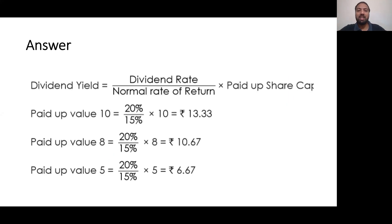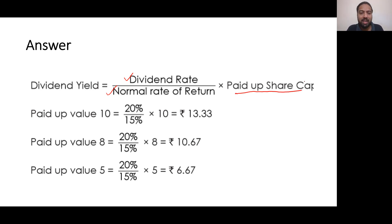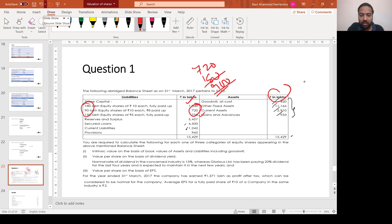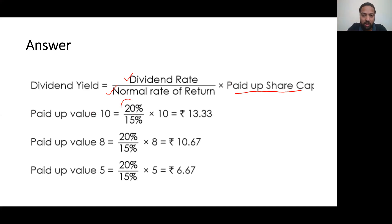Now for the dividend yield method — students who studied part 1 know this. Dividend yield method formula: dividend rate divided by normal rate of return, multiplied by paid-up share capital. The normal rate of dividend in the concerned industry is 15%, whereas Glorious Limited has been paying 20% dividend. So: for Rs 10 paid-up: 20/15 × 10 = Rs 13.33; for Rs 8 paid-up: 20/15 × 8; for Rs 5 paid-up: 20/15 × 5.